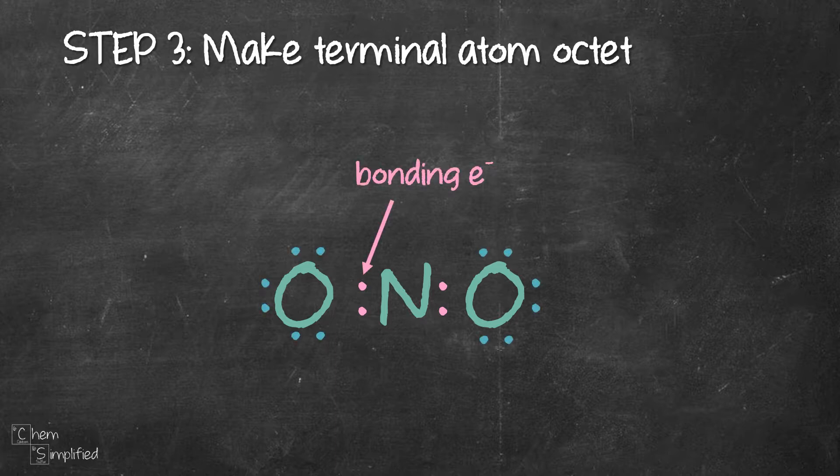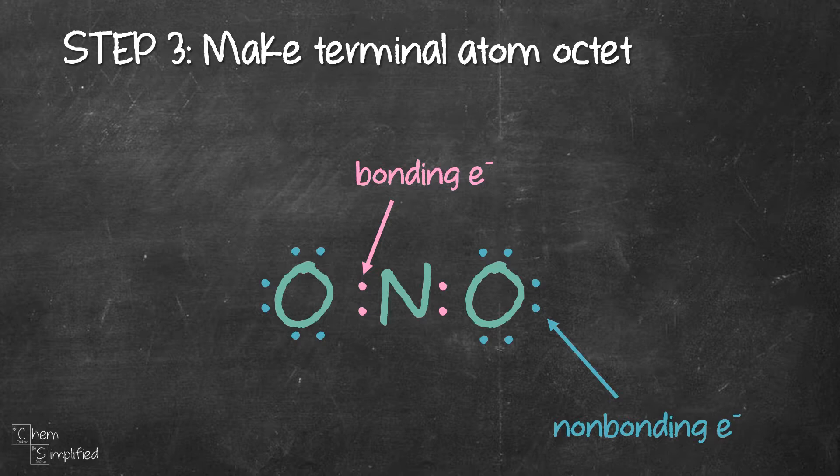The pink electrons connecting nitrogen to oxygen is called the bonding electron. And the ones in blue, those are not involved in bonding, so we call them non-bonding electrons or lone pair.